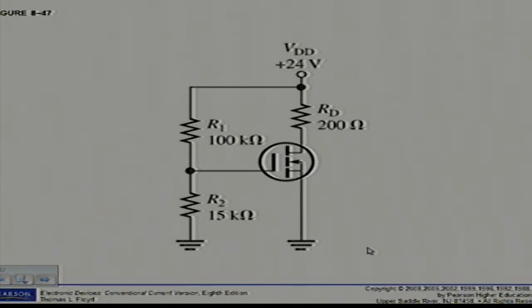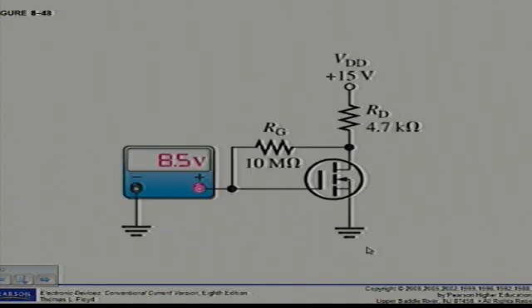Example 8.19. Determine the amount of drain current in figure 8.48. The MOSFET has a VGS threshold of 3 volts.